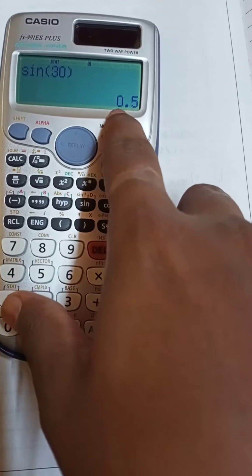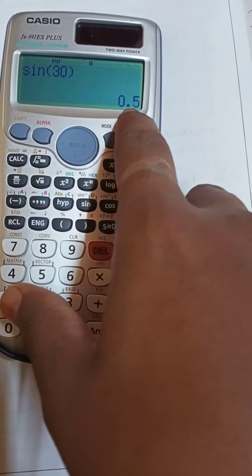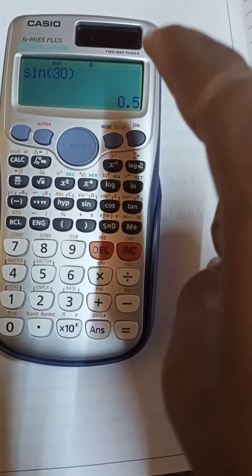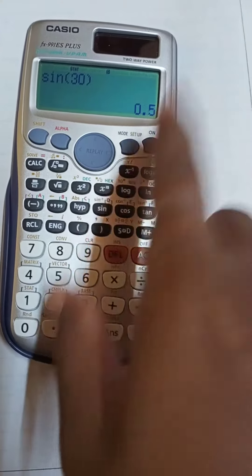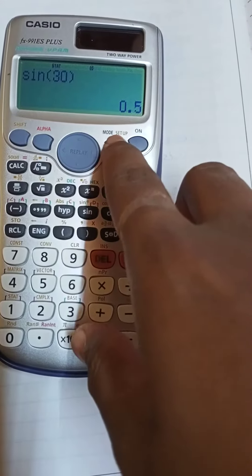As you guys can see, the answer comes as 0.5 but the answer should be 1 by 2, that is half. But this is not showing the answer like this, so you need to click on mode and setup over here.